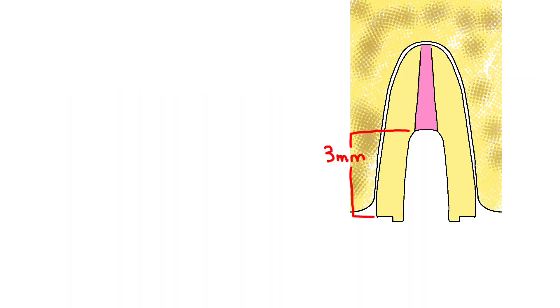For the amalgam core to be strong enough to support the crown, penetrate at least 3mm into the canal and place the amalgam. Condense it well.